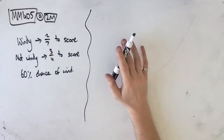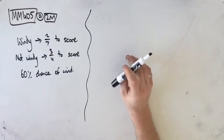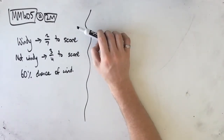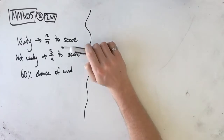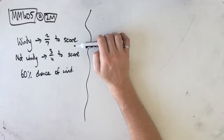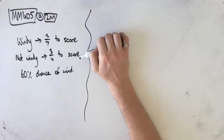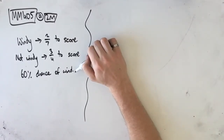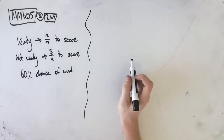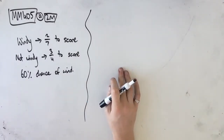Welcome to question MM405 of the Maths Methods Fortify Study Guide. In this question we've got Addison, who plays football every Sunday. His ability to kick a goal depends on how windy it is. If it's a windy day, his chance to score a goal attempt is 2 in 7. If it's not a windy day, his chance to score is 3 in 4. During the football season, there's a 60% chance of strong winds on any given day. Our first task is to find the probability that Addison kicks a goal on any given Sunday, assuming he only attempts one goal.